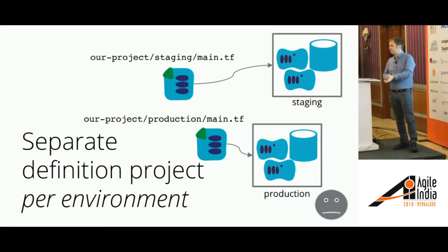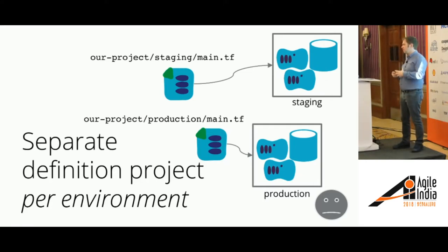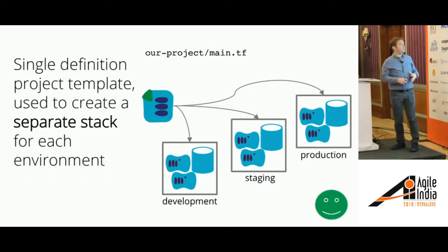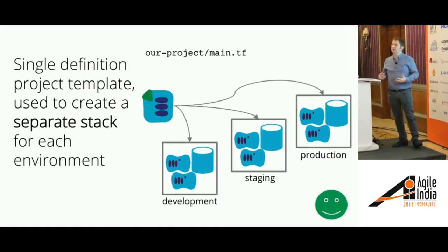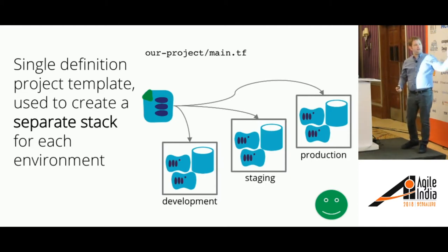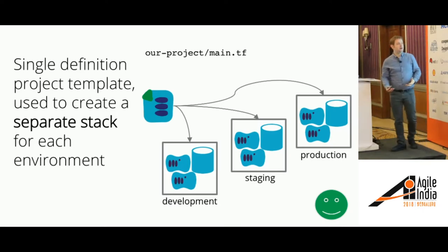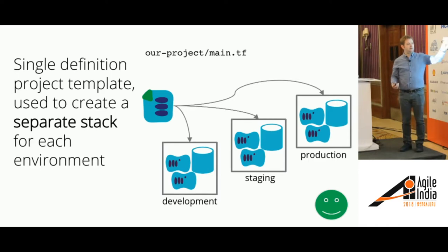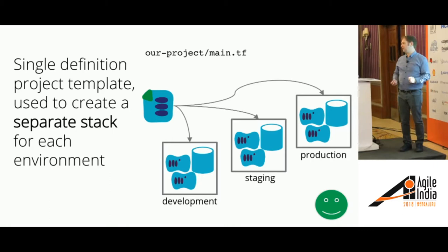What I tend to recommend is treating it like an application artifact — a Java WAR file or whatever. You have a single project, and when you run Terraform you create a separate stack for each environment but pass parameters to it with a different name. This means you've got a single file that works for each. You make changes, apply to your development environment and test it, and then once happy, run the command again telling it to apply to staging, then to production. This gives consistency and control across environments.